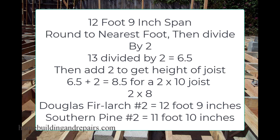In our last example, let's take a 12-foot 9-inch span — the longest length usable for number 2 Douglas fir. This also gives us an example of a number that needs to be rounded to the nearest whole number, which in this case will be 13. The result is 8.5, suggesting we need to use 2 by 10 instead of 2 by 8, even though the lumber chart suggests otherwise.